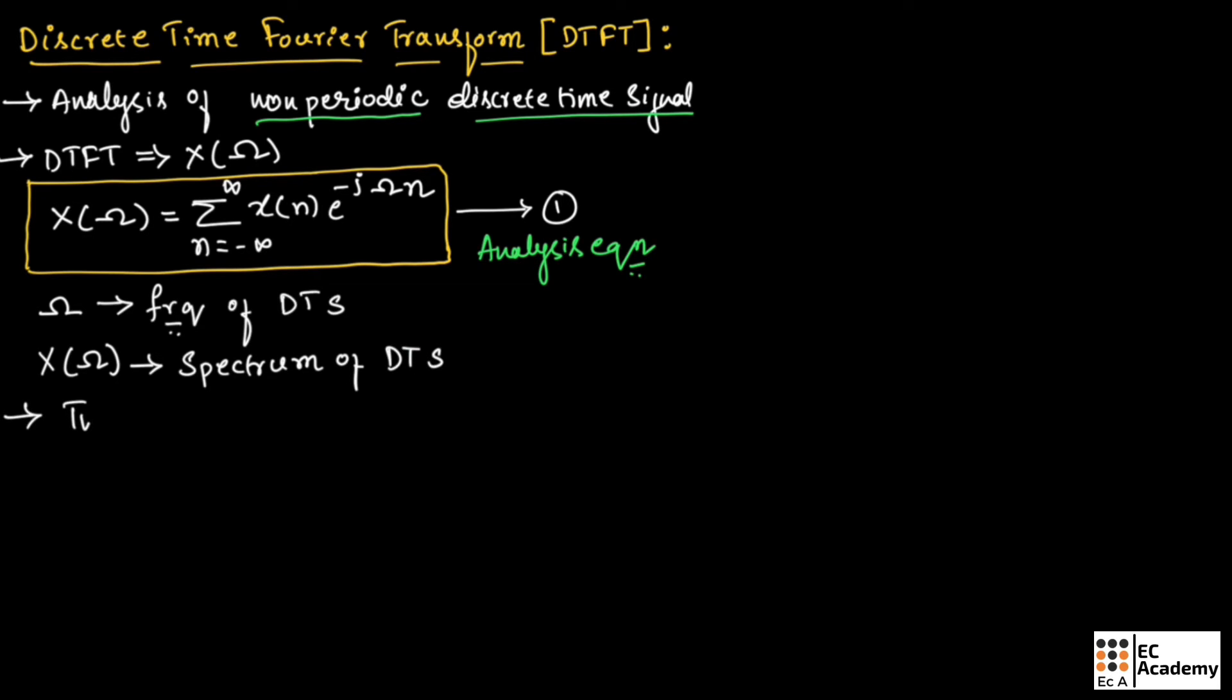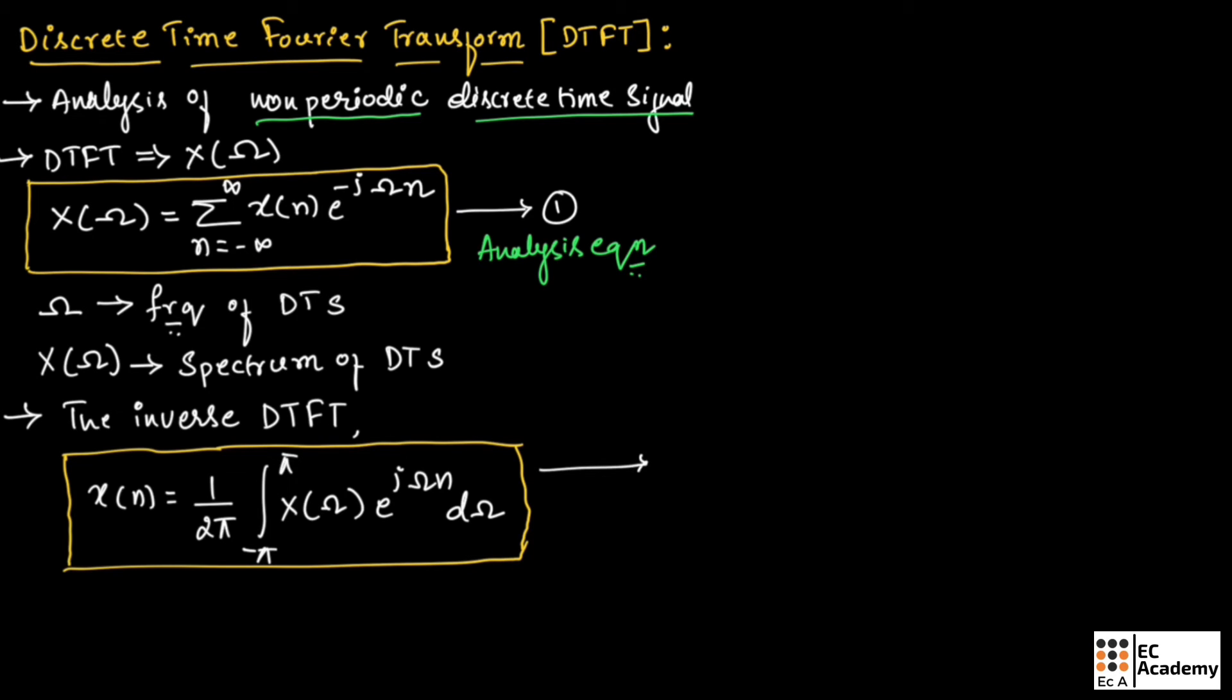The inverse DTFT can be given as X of n equals 1 over 2 pi times the integral from minus pi to pi of X of omega exponential to the power of j omega n d omega. Let us call this equation number 2. This equation is also known as the synthesis equation.